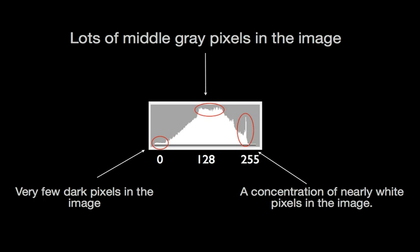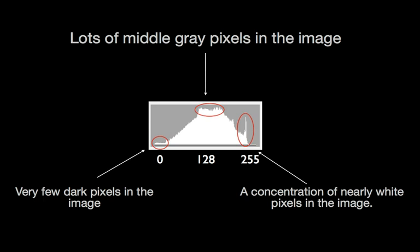But what about the vertical axis of the graph? What do those values represent? The vertical axis of the graph tells you how high or low a concentration of black, white, or middle gray tonalities you have at any given range.